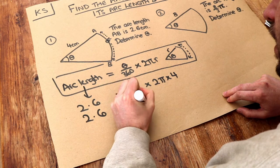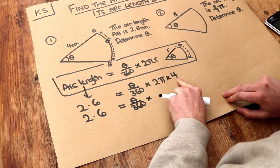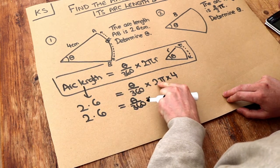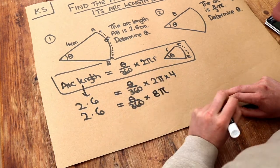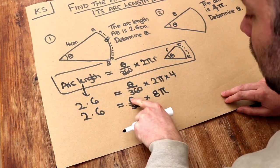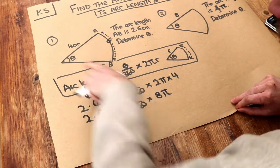We've got θ/360. Now 2π times 4, well 2 times 4 is 8, and it's going to be 8 lots of π. Now let's try and gradually get rid of the various things around the θ, because we want to work out what θ is.